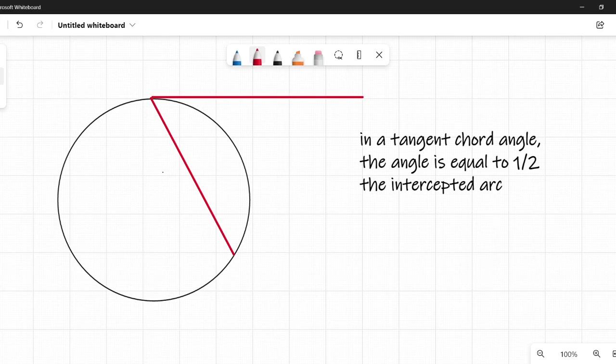So what does that mean? If I put some letters on here, call this A, B, and C, then I can write a formula for this that hopefully makes it a little more clear. So my angle here would be angle ABC.